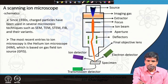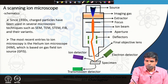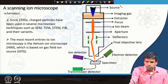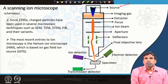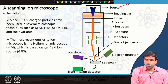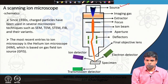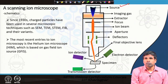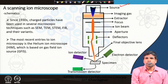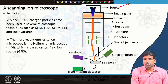Both in the scanning electron microscope and helium ion microscope we have a source — in SEM it is an electron gun, and here we call it an ion gun — sitting at the top of the microscope column. Because it is an ion gun, we need to create ions, so we must have a particular gas: it can be helium, neon, or gallium.